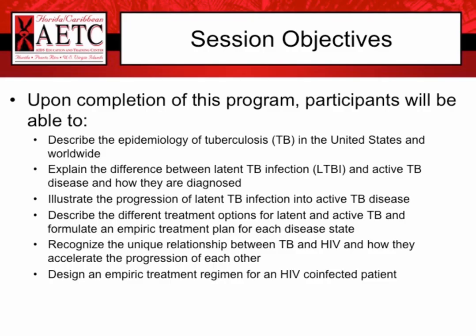Upon completion of this program, participants will be able to describe the epidemiology of tuberculosis in the United States and worldwide; explain the difference between latent TB infection and active TB disease and how they are diagnosed; illustrate the progression of latent TB to active disease; describe treatment options for latent and active TB; recognize the unique relationship between TB and HIV; and design an empiric treatment regimen for an HIV co-infected patient.